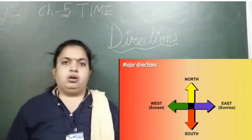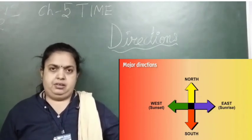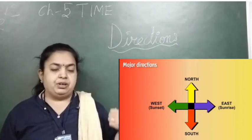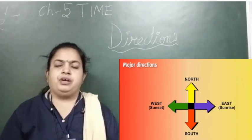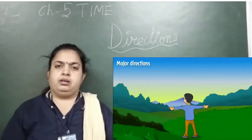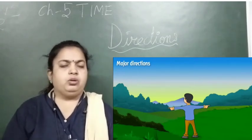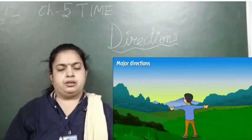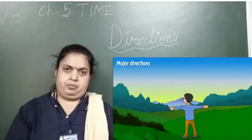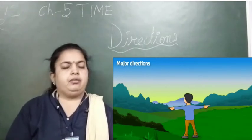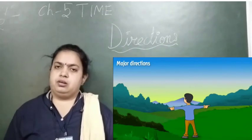You can see here: north is on the upper side, south is on the lower side, east is on the right hand side, and west is on the left hand side. If you stand facing the sun, you can see the boy with his hands like this, and he is standing. So the part which is facing the sun — that is the east, and the back side is the west.